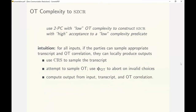Finally, we give an overview of our construction of SZCR using a two-party secure computation protocol. Our goal is to use a protocol with small OT complexity to construct an SZCR using common randomness with high acceptance probability to a low complexity predicate. The construction uses the following intuition.